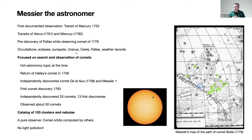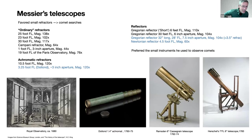In the process of searching for Halley's Comet, Messier independently discovered another comet, the comet de Nanux in 1758, which passed by an object we now know as Messier 1 — though that object had actually been discovered more than 20 years earlier by someone else. His first comet discovery was in 1763, and he went on to independently discover 20 comets, 13 of which were his first discoveries — meaning 13 comets bear his name today. He observed about 50 comets during his life. He is of course today known mostly for his catalog of 103 clusters and nebulae.